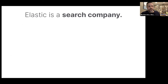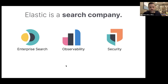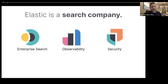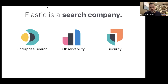Elastic is a search company. A lot of people think about search as searching for websites or documents, but there's much more to it. Searching is how you find what's normal, what's trending in the wrong direction, what caused a failure — that's observability. Searching is how you find threats in your network or bad user behavior — that's security. And of course, searching for websites and documents is enterprise search.